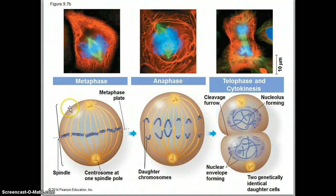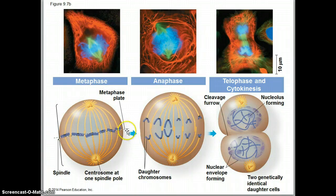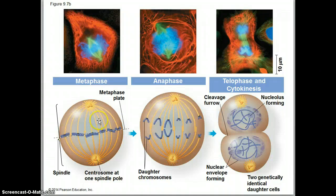In metaphase, you will see the sister chromatids lining up on the metaphase plate. It's not a real thing — it's just a hypothetical place, kind of like the equator on the earth; there isn't really a line there, it's just a location. So they are all lined up on that metaphase plate, ready to go.